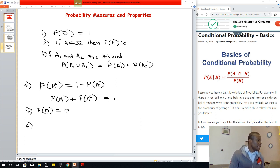Let's take number six. In this case, if A is a subset of B, then this is very important: probability of A must be less than or equal to the probability of B.